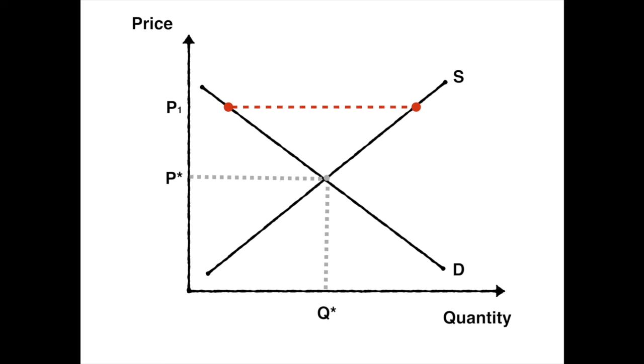And when we're trying to identify what that excess supply is or that surplus, it's going to be calculated by looking at the difference between Q2 minus Q1. At a price of P1, quantity demanded is Q1 so consumers are only willing to buy an amount Q1,